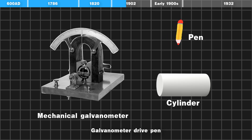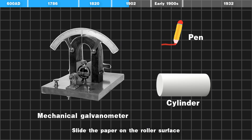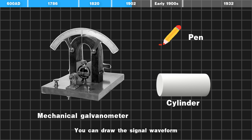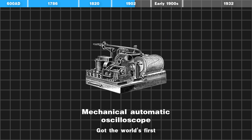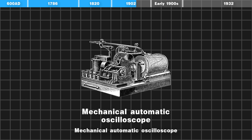The galvanometer drives the pen while paper slides on the roller surface as the drum rolls, allowing it to draw the signal waveform. This produced the world's first mechanical automatic oscilloscope.